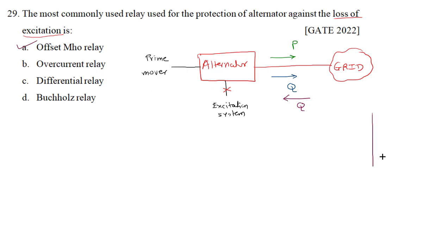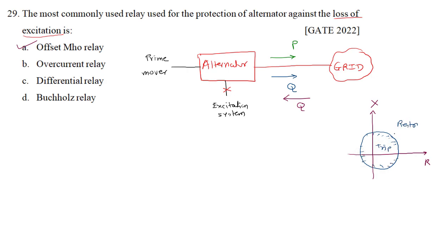The correct answer is option A. Now, how does the offset mho relay characteristic look? On the R-X plane, a normal mho relay passes through the origin, but the offset mho relay gets shifted either downward or upward. Within this characteristic the relay trips; outside it, the relay rests. So for loss of excitation, we use the offset mho relay.